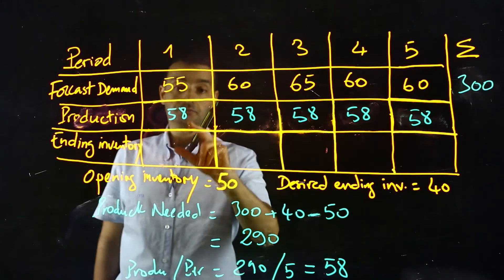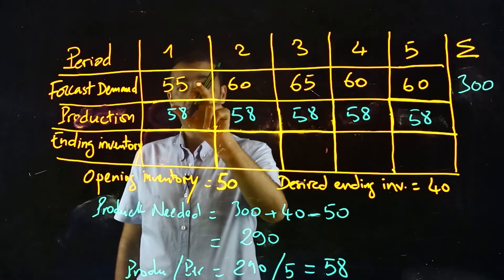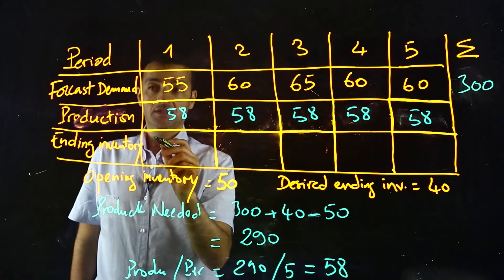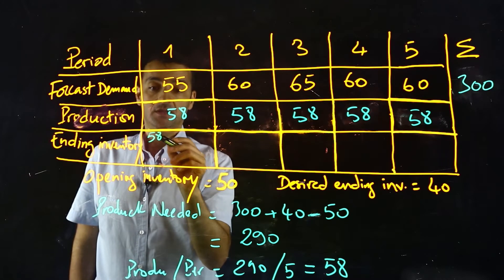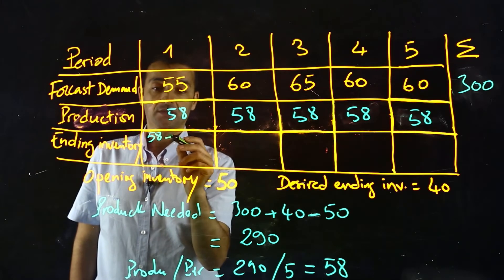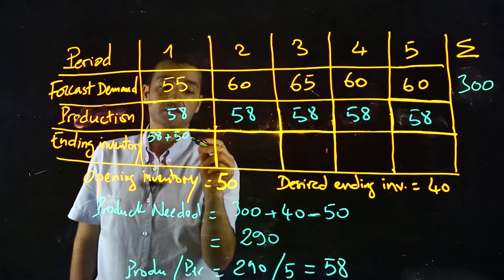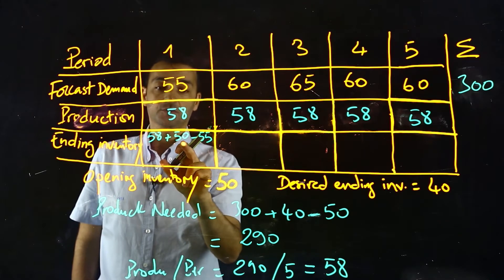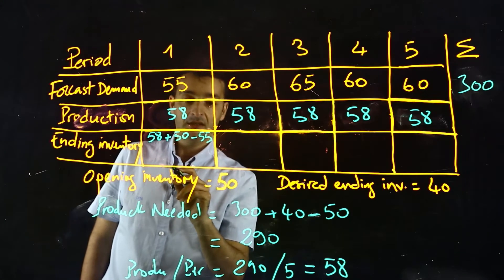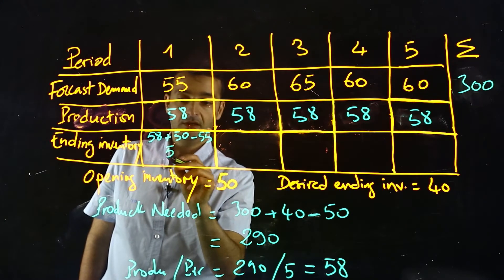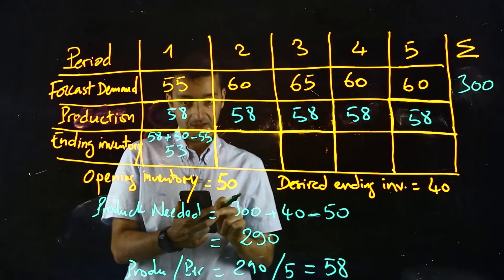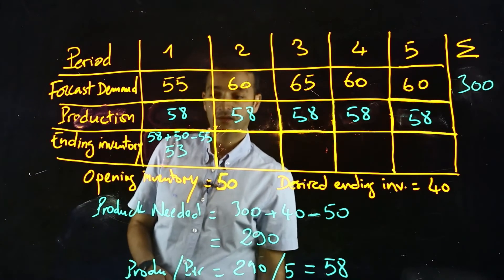The ending inventory should take into account the forecast demand, the production, and the opening inventory. The formula is: production plus opening inventory minus demand. So for period 1: 58 plus 50 minus 55. The result is 53.